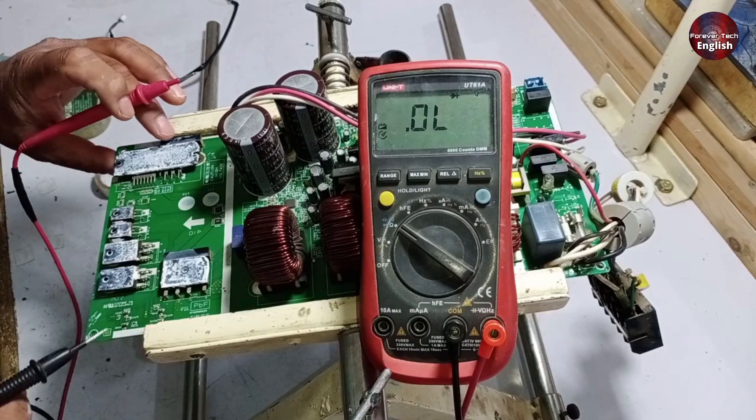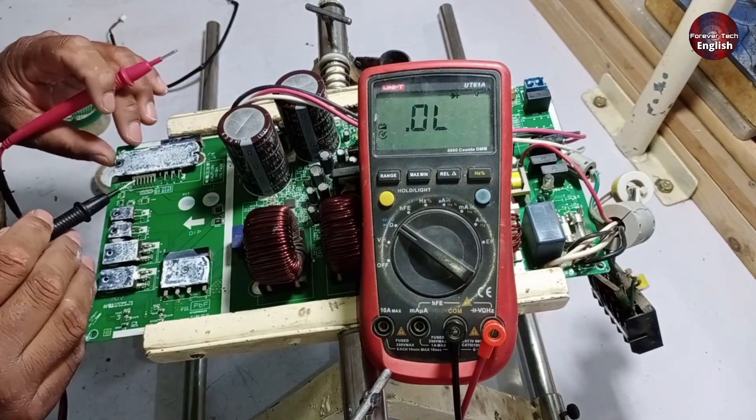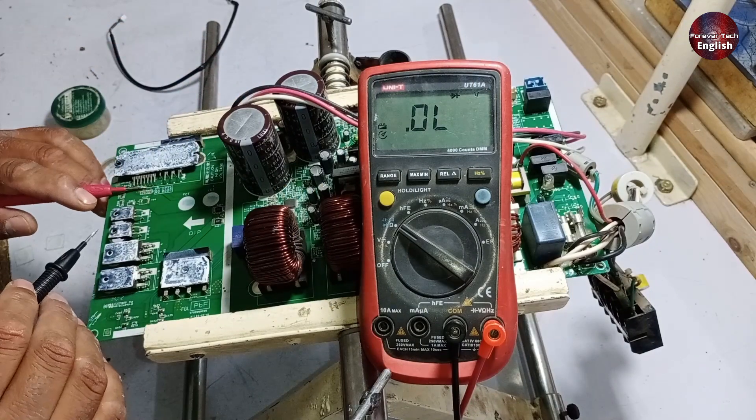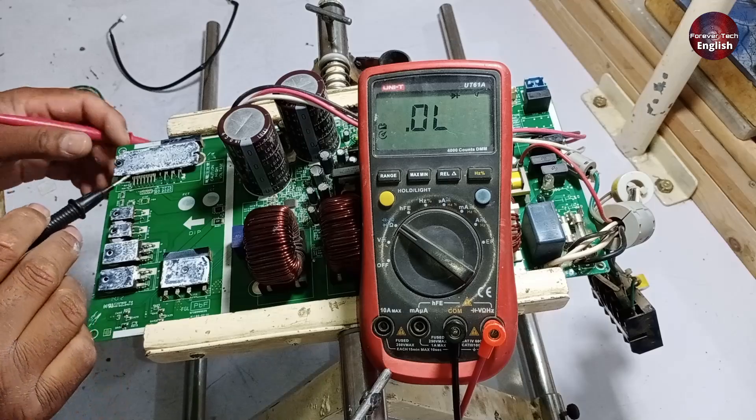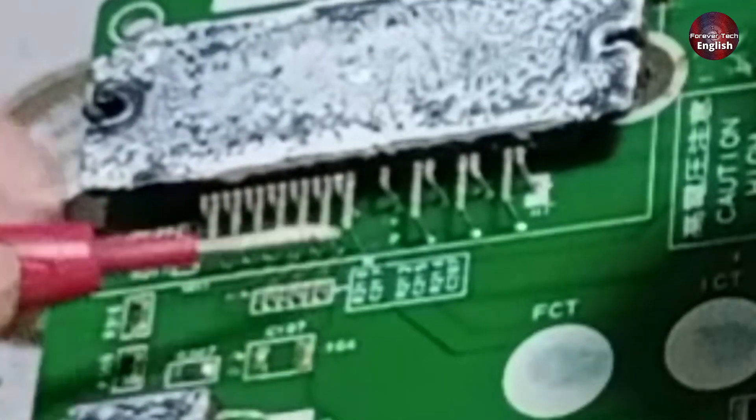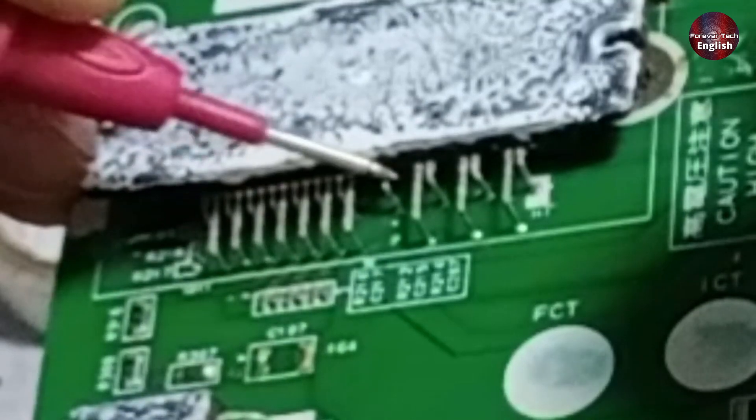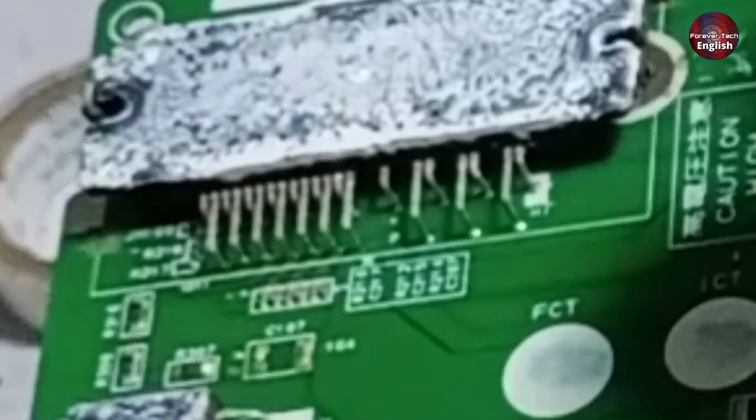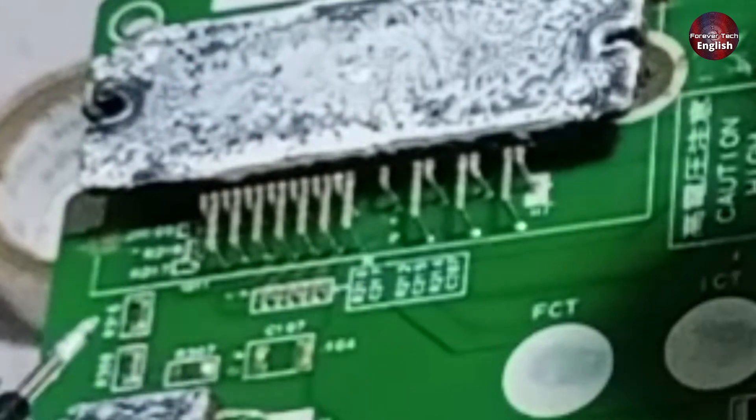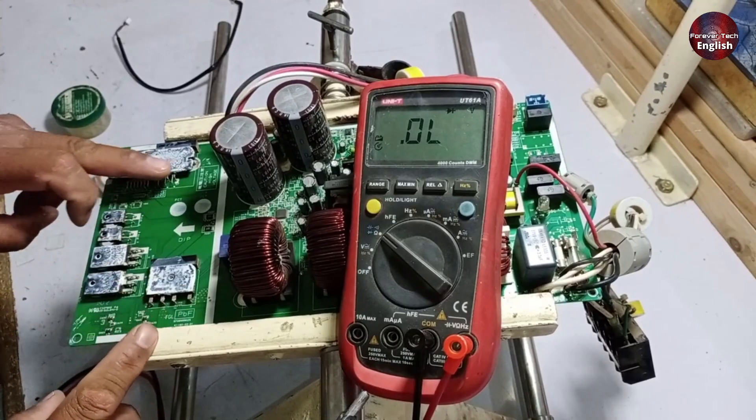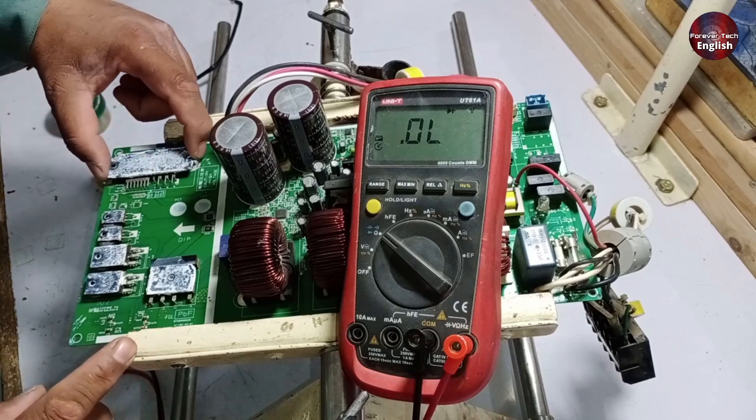Now let's check the IPM. This one is slightly different. To test a different IPM, you need to have its datasheet and know the pin configuration. Looking at this, we can see that this pin is neutral, and the inner pin is positive. After that, we have U, V, and W, so you need to test this IPM with the same procedure I told you about in another video. We have checked all the high side connections, and we have also checked the IPM.